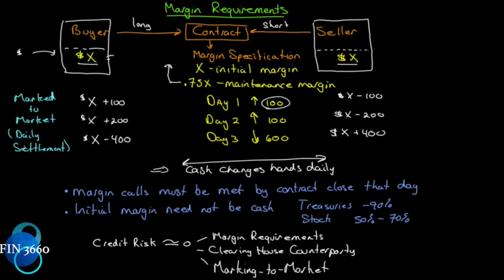This is for an exchange-traded contract — that's why it's called a futures. A forward contract is what this essentially is, but we call it a futures when it's exchange traded. Daily settlement is an exchange-traded specification.